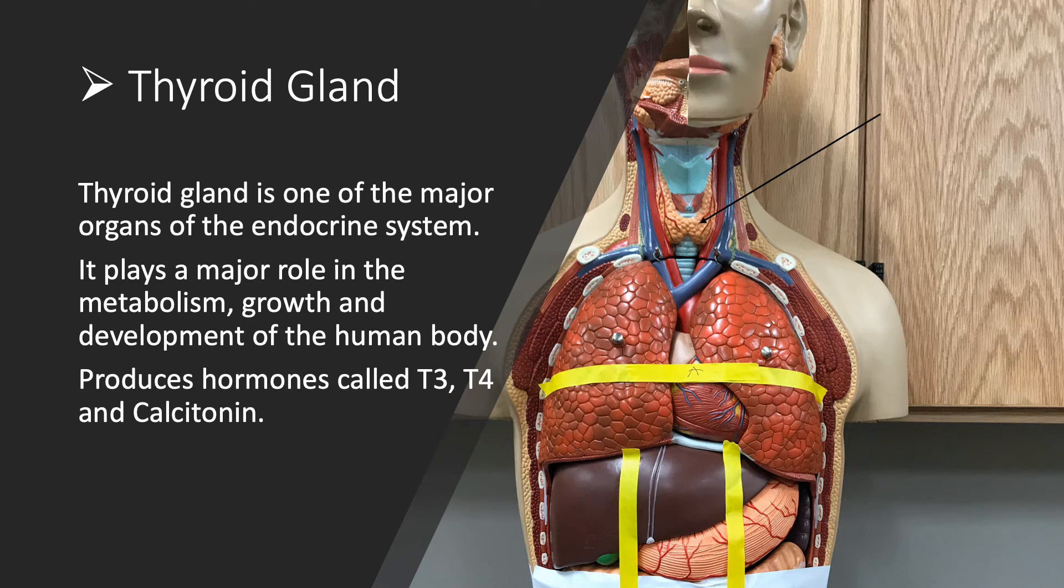Thyroid gland is one of the major organs or glands of the endocrine system. It plays a major role in the metabolism, growth, and development of the human body. It produces hormones called T3, T4, and calcitonin.